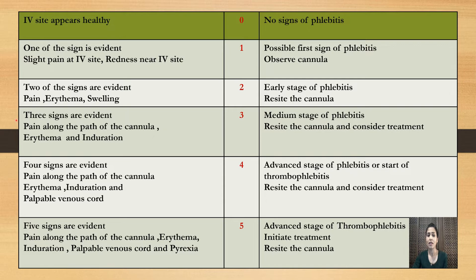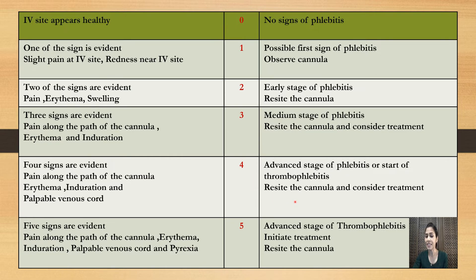If three signs are evident — pain along the path of the cannula, erythema, and induration — you give a score of 3. This represents the medium stage of phlebitis, so you have to remove the cannula and consider treatment. Sometimes doctors may prescribe thrombophob ointment or magnesium sulfate paste dressing; as per the doctor's order we initiate treatment. If four signs are evident — pain along the path of the cannula, erythema, induration, and palpable venous cord — you give a score of 4. This means advanced stage of phlebitis or start of thrombophlebitis, so you remove the cannula and consider treatment as per doctor's order.